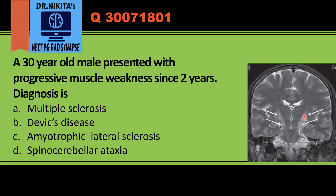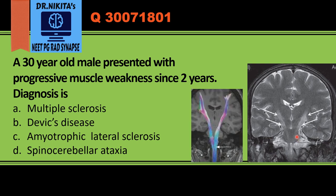So this is a T2-weighted MRI where we have this hyperintensity — that is white pathology — bilateral and symmetrical. Anatomically, this is along the corticospinal tracts, involving bilateral corticospinal tracts on each side. Bilateral symmetrical hyperintensity in corticospinal tracts is seen in amyotrophic lateral sclerosis.